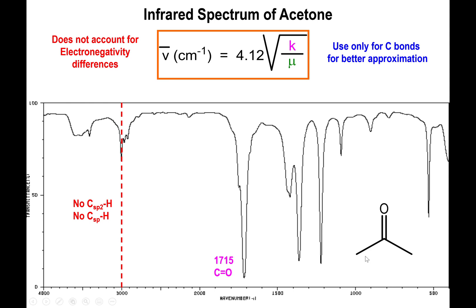For ketones, we do not have any C-H bonds bound to alkene or alkyne carbons. Therefore, you don't see much of anything above 3000. What you observe here is actually water impurities absorbed by acetone, so this is not the purest sample, but it's more or less representative of what you will see in the laboratory.